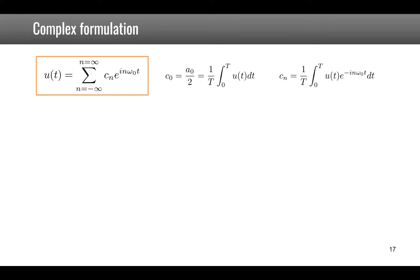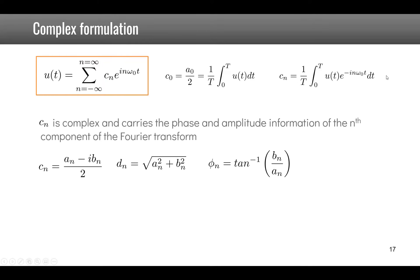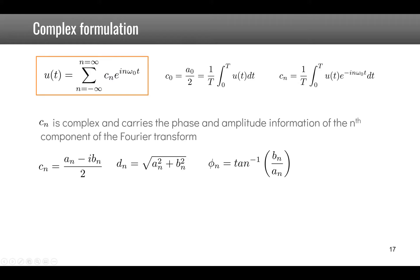An alternative representation of the discrete Fourier transform uses the complex formulation, where u(t) is expressed as a function of complex coefficients cₙ. These coefficients encode the phase and amplitude of each component, since cₙ = (aₙ - ibₙ)/2, which links to the signal amplitude dₙ and phase. Note that cₙ and c₋ₙ are complex conjugates, ensuring u(t) is real.